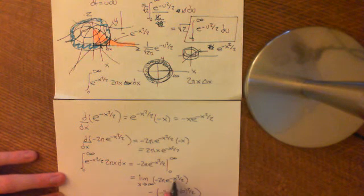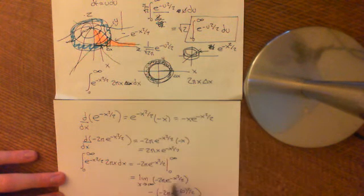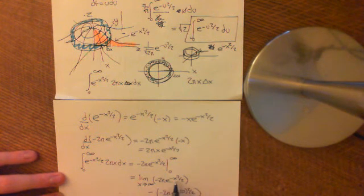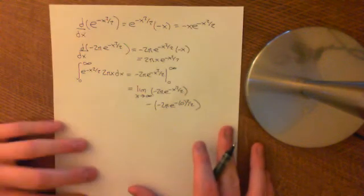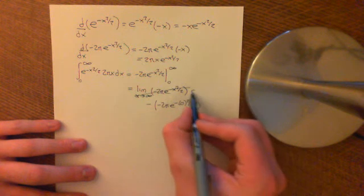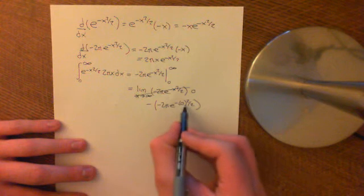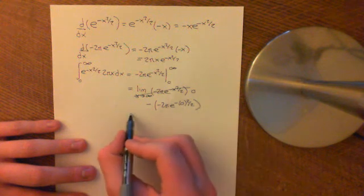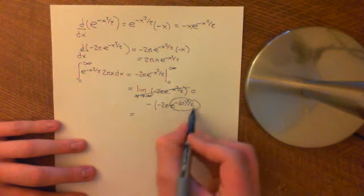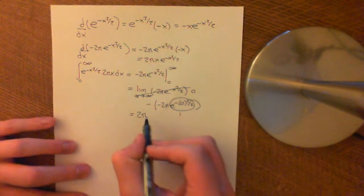The limit as x approaches infinity: this is a bell-shaped curve, so it goes to 0 — the exponent gets bigger and bigger and taking the negative exponential of a large number gives 0. So the limit is 0. Evaluating at x equals 0: the exponent is 0, and the exponential function at 0 is 1. So we get 1 times negative 2 pi, but with the minus sign in front, giving us 2 pi. The volume under the molehill is 2 pi.